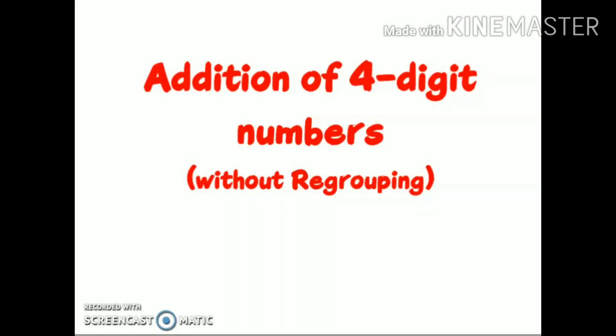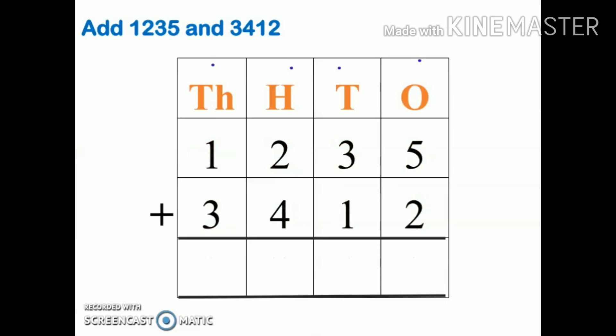Hi everyone, today we are going to discuss addition of four-digit numbers without regrouping. It means without carry over, simple addition of four-digit numbers. Our first example: add 1235 and 3412. First rule - I have to write both the numbers in columns.